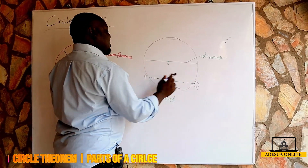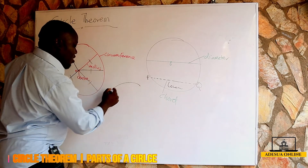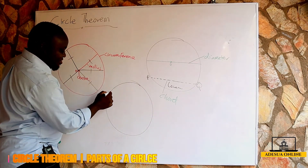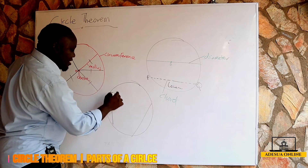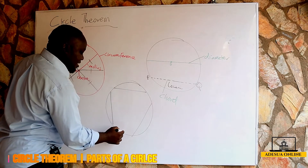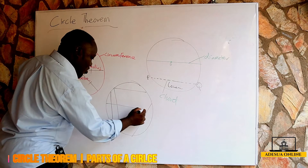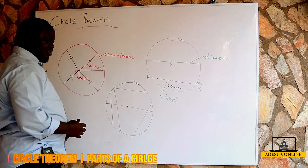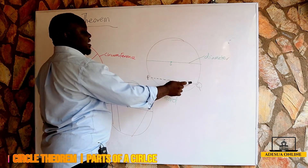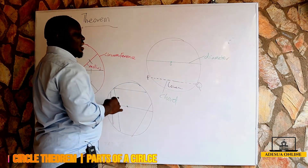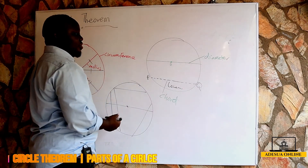For any circle, we can talk about the circumference, we can talk about a chord. A chord can be drawn in various ways. PQ is a chord, and I can also draw chords across the circle in different positions. Even a diameter is also a chord, because it goes from one end of the circle to the other.